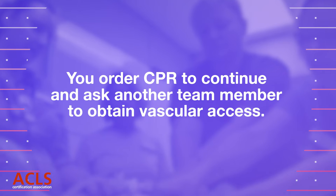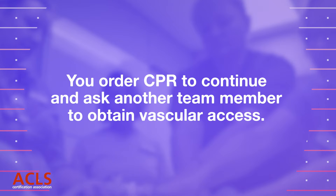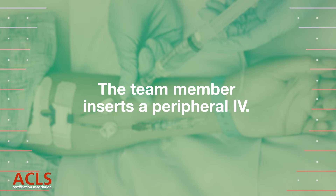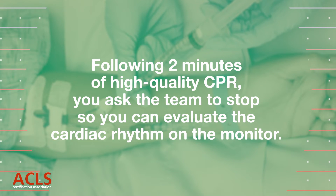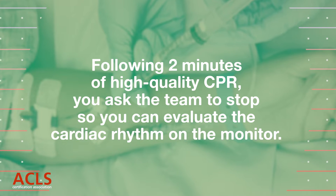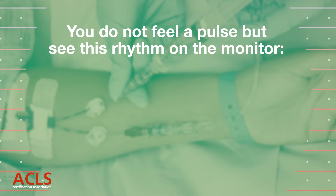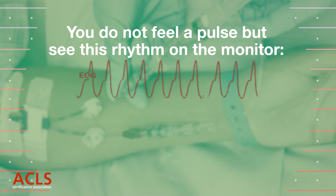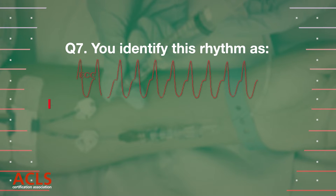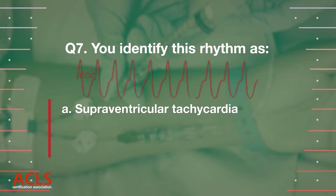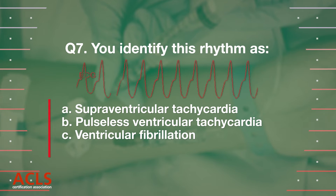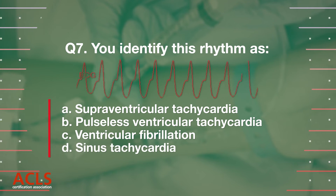You order CPR to continue and ask another team member to obtain vascular access. The team member inserts a peripheral IV. Following two minutes of high-quality CPR, you ask the team to stop to evaluate the cardiac rhythm. You do not feel a pulse. Question 7: You identify this rhythm as: A) Supraventricular tachycardia, B) Pulseless ventricular tachycardia, C) Ventricular fibrillation, D) Sinus tachycardia.